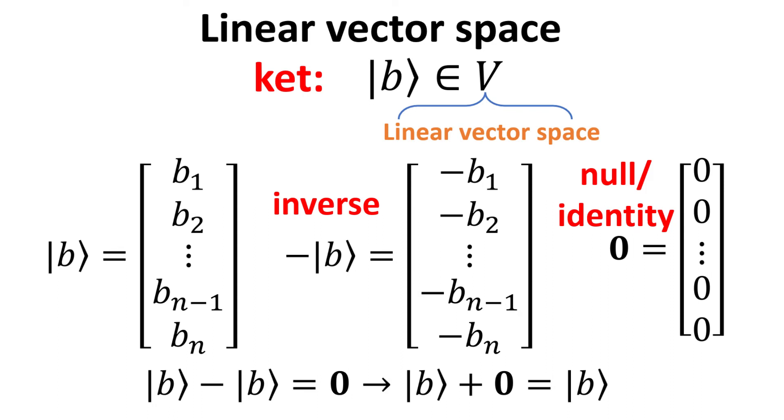First, consider n-dimensional vector space V. The B ket is then a column vector of n tuples of complex numbers B1, B2 and so on, up to Bn as shown.